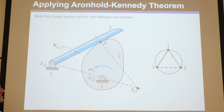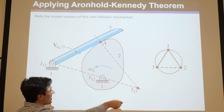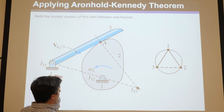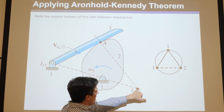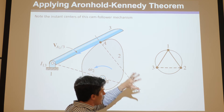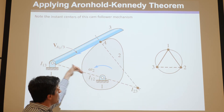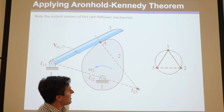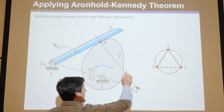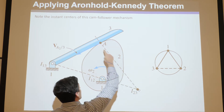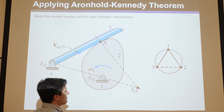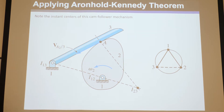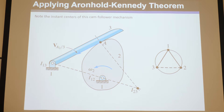Because this is rolling contact, we know the instant center lies along the common normal line. And from Kennedy's theorem we know it lies along the other line, so it has to be at their intersection. You can verify this: if you extended the link here, the velocity would point in that direction, and on the other extension it would point in the same direction — confirming they have the same velocity at that point.